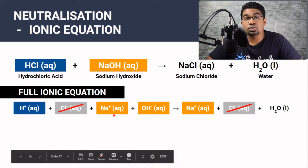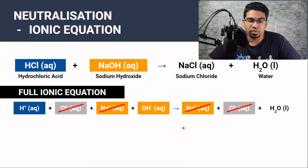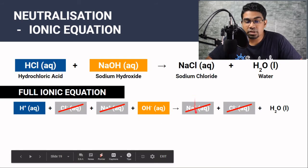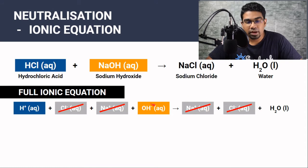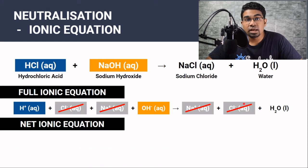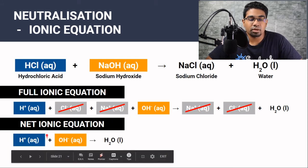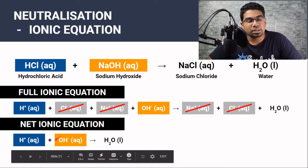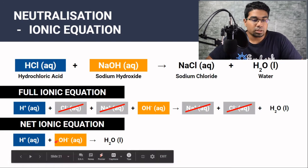Sodium also exists exactly the same before and after — as Na⁺ ions in aqueous solution — so sodium is also a spectator ion; it didn't take part in the reaction, so we remove it. Hydroxide ion has reacted with hydrogen ion to form a water molecule. Once we remove the spectator ions, what is left is the net ionic equation: one mole of H⁺ reacting with one mole of OH⁻ to form one mole of H₂O. It doesn't matter what the acid or alkali is — the net ionic equation for neutralization is always H⁺ + OH⁻ → H₂O.